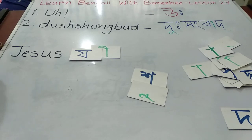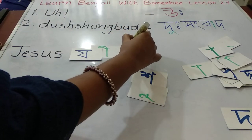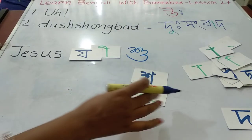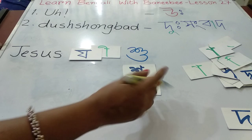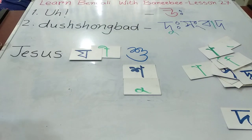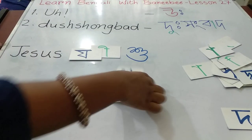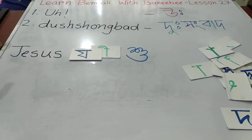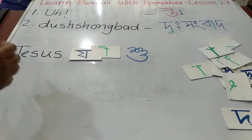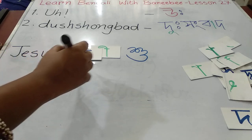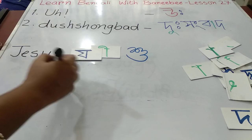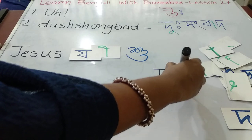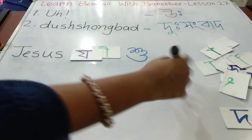You know that in Hindi they have a word called 'Ishu' and in English they have the word 'Jesus'. So 'Jesus' is 'Jishu' in Bangla. When you put the U sign with 'Shaw', it looks something like this. So this is how 'Jishu' is written and pronounced in Bangla.